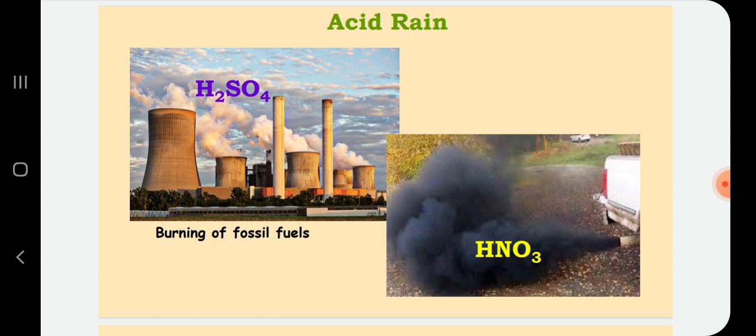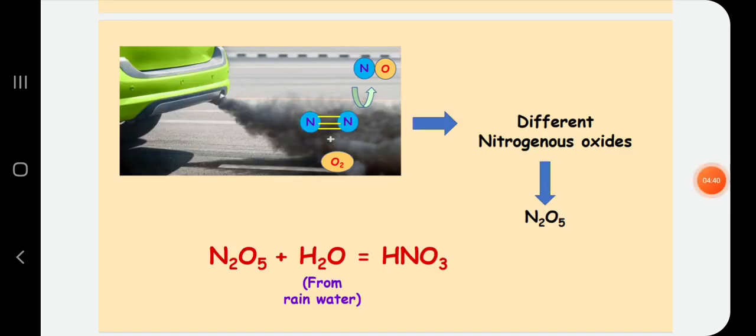Another acid which is responsible for acid rain is nitric acid and it is coming out from the exhaust pipe of petrol or diesel engines. In the cylinder of motor vehicles, at high temperature condition, small amount of nitrogen reacts with aerial oxygen to form different nitrogenous oxides. These oxides then react with excess amount of oxygen to form higher oxide of nitrogen that is N2O5 or nitrogen pentoxide. This N2O5 dissolves in rain water to form nitric acid and falls down in the form of acid rain. So, mainly in these two ways, common rain becomes acid rain.